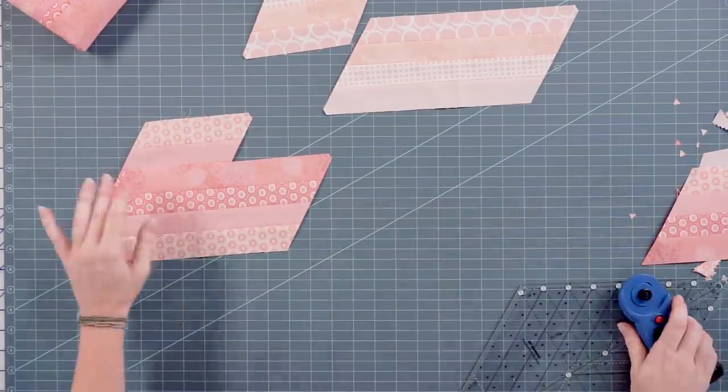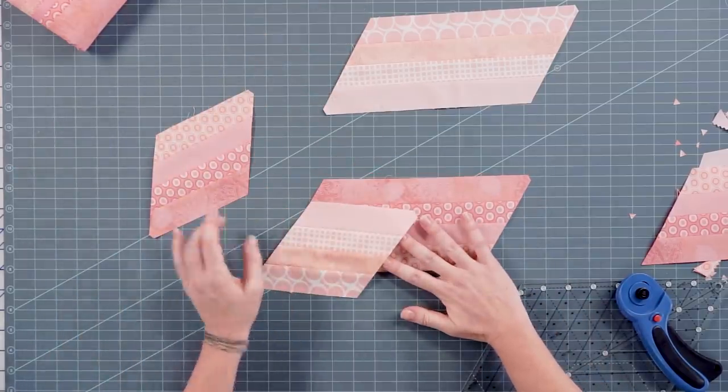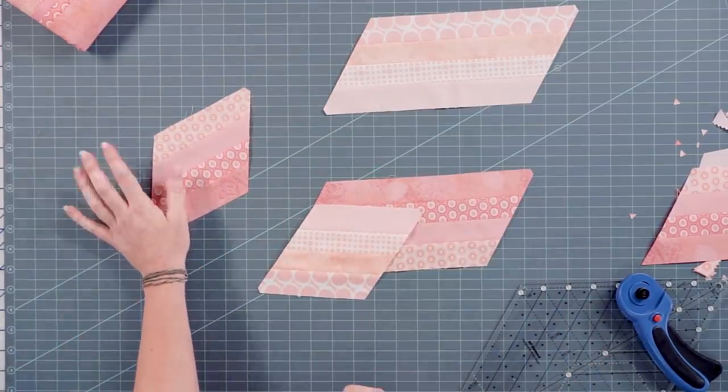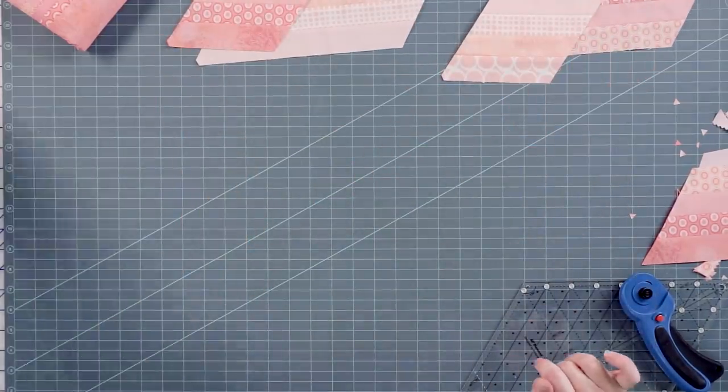So those will get sewn to each other. What we're going to do here is grab the diamond from the lighter set, the parallelogram from the darker set, and the reverse of the other. But we need some background first. So that's the next cut.